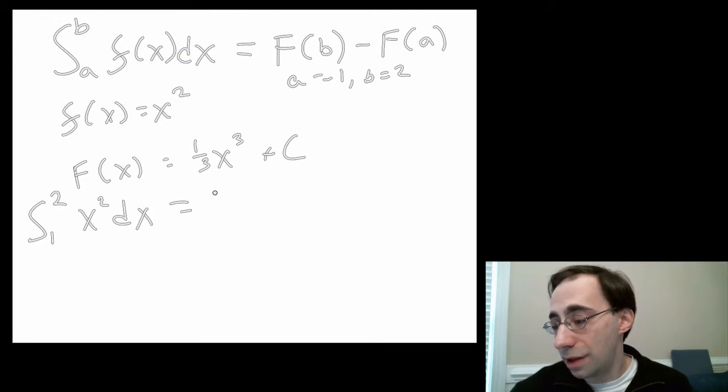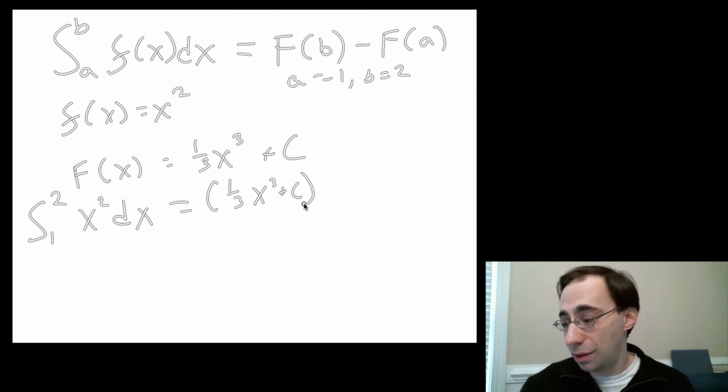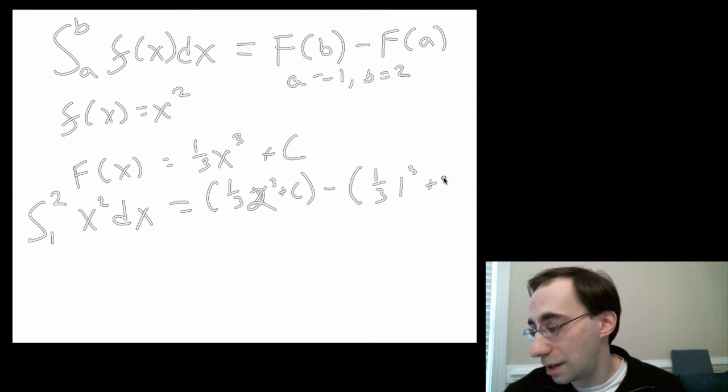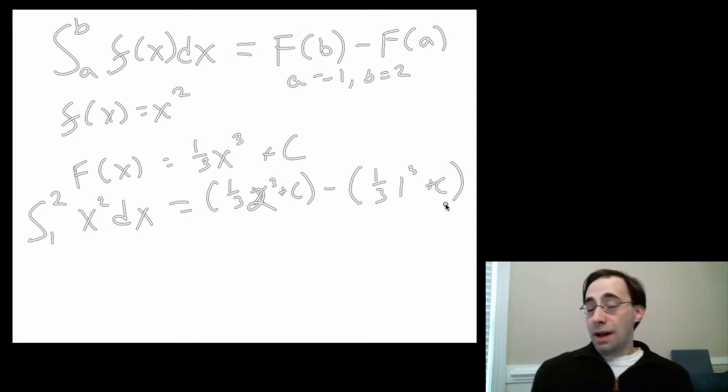This equals the function evaluated at 2. So I'm going to plug in a 2 over here for the x. So (1/3)(2³) minus the same function evaluated at 1. So I'm going to plug in a 1³ for x. And that's it.